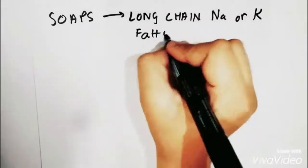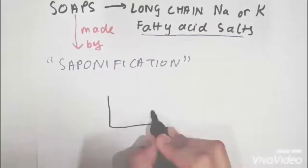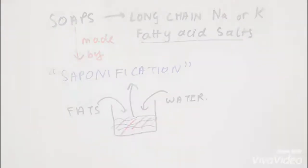Soaps are long-chain sodium or potassium fatty acid salts which are made by a process known as saponification. Saponification is the formation of soap by the reaction of fats and water.